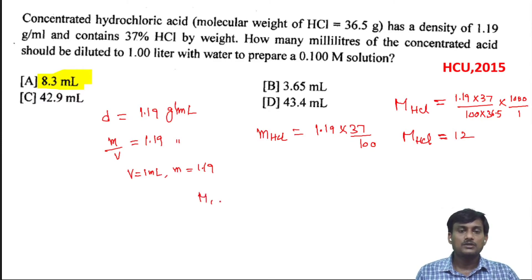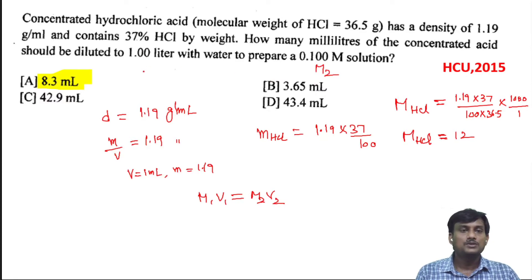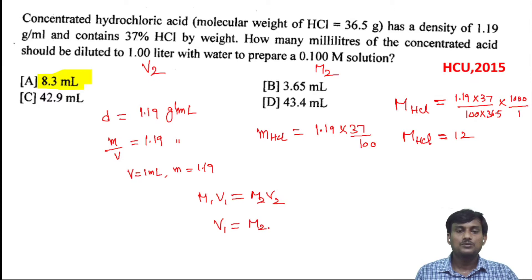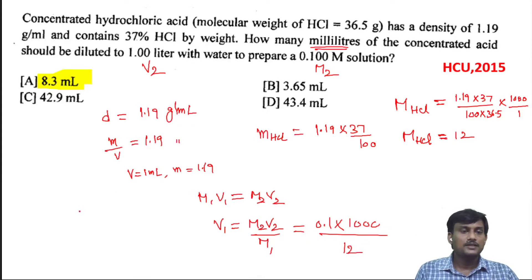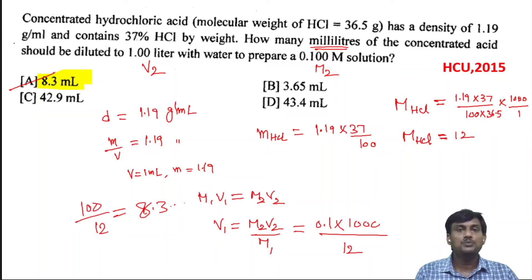After dilution, the relation is M1V1 = M2V2. M2 is given as 0.1 and V2 is 1 liter (1000 ml). We need to calculate V1. V1 = M2V2 / M1 = 0.1 × 1000 / 12 = 100/12 = 8.333. So the correct answer is 8.3 ml.